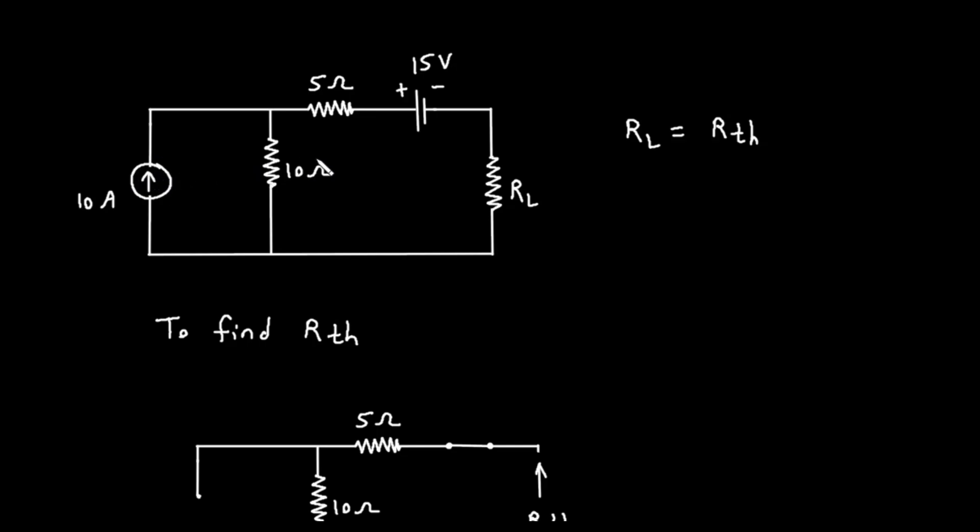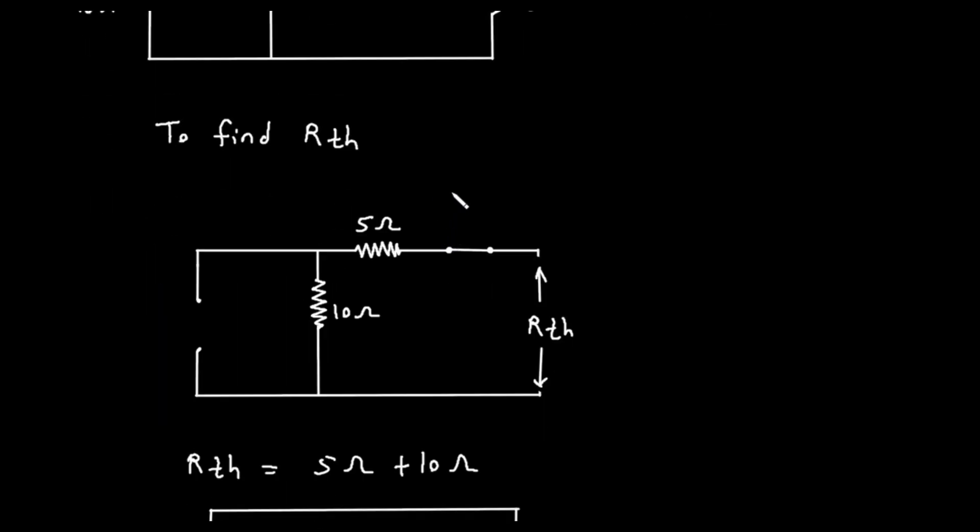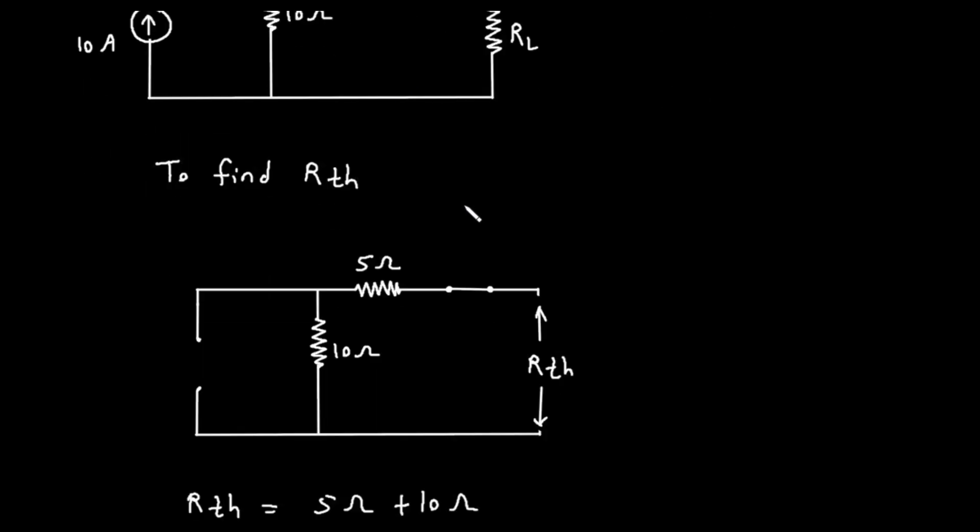An ideal voltage source is deactivated by replacing it with a short circuit. This means we replace the voltage source with a simple, straight wire. A short circuit has zero voltage across it, which is what a turned off voltage source represents.